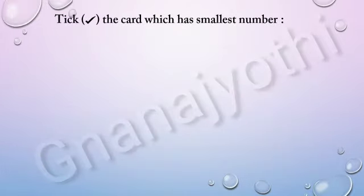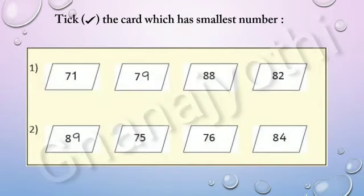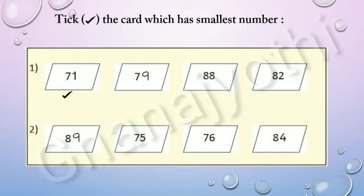Now, take the card which has the smallest number. Look at the first question — here there are the numbers 71, 79, 88 and 82. Among these, the smallest number is 71. So, let us take the smallest number, that is 71. Look at the second question — here there are 89, 75, 76 and 84. Among these, the smallest number is 75. So, let us take the number 75.